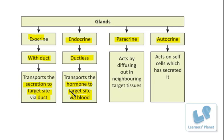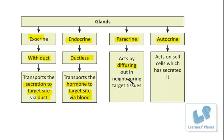Next, there are other glands called paracrine and autocrine. These may not be in your textbooks, but they are important types. Paracrine glands secrete a secretion that diffuses out of the cell, with the target site nearby. The transport occurs simply through diffusion — neither through blood nor through a duct. Since neither duct nor blood transport is involved, diffusion is the only process that transports the chemical secretion to the nearby target site.